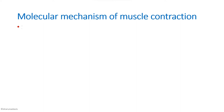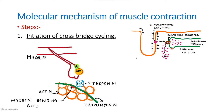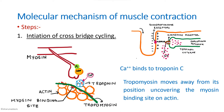The initiation of contraction occurs due to the release of calcium. When a muscle membrane is activated, there will be depolarization, which leads to release of calcium from the sarcoplasmic reticulum. That calcium binds to the troponin C part of the actin filaments, causing a conformational change in the tropomyosin. The tropomyosin moves away, uncovering all the myosin binding sites. This is the initiation of cross-bridge cycling.